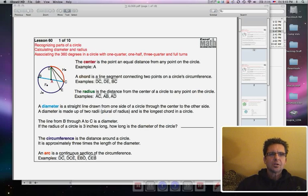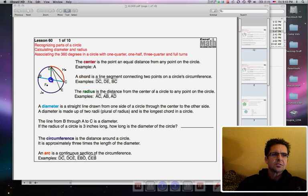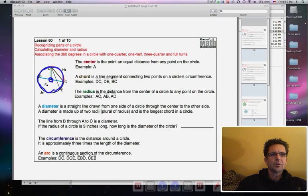The center is the point of an equal distance from any point on the circle. You can see that right here, point A is the center of the circle because every point that comes around here on the circle is equal in distance to the center. Every point on here, it's smack in the middle of the circle. That's pretty simple.